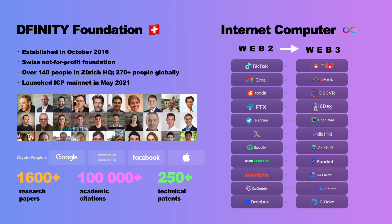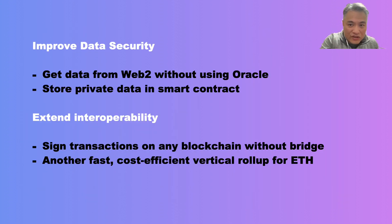Let me briefly introduce who we are and what we do. DFINITY Foundation is one of the oldest foundations in crypto, created by our founder and chief scientist Dominic Williams in October 2016 in Zurich, Switzerland as a non-profit foundation. We are a very research-oriented team with some of the best cryptographers and computer scientists in our R&D organization, including Jans Gross who pioneered ZK-SNARKs, Jans Kemenes our CTO and IEEE fellow who used to lead IBM's lab in Switzerland, Victor Shoup who co-authored the famous cryptography textbook with Dan Boneh, and Ben Lin, the L in the BLS algorithm.